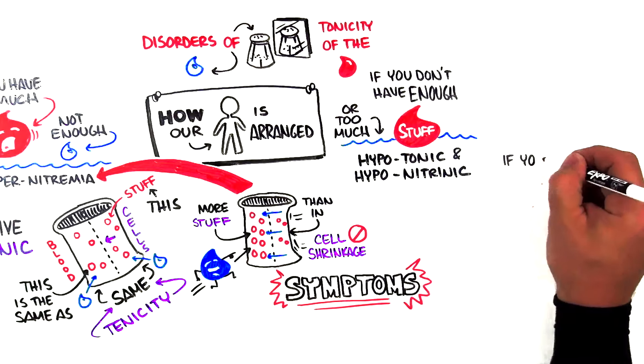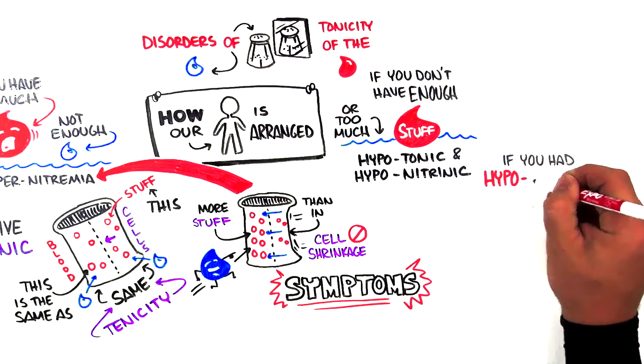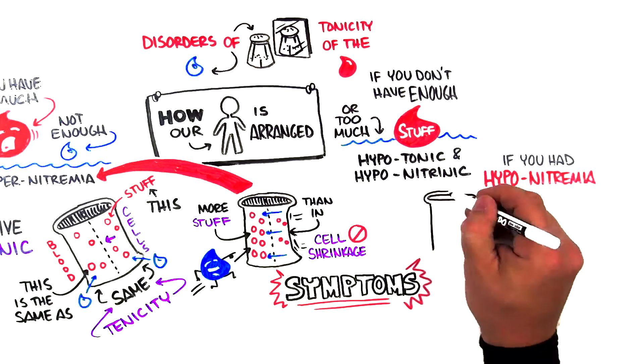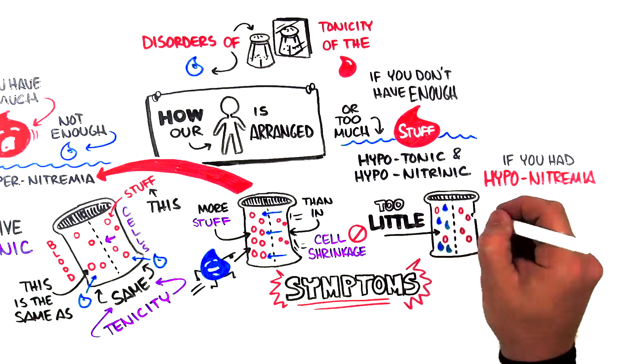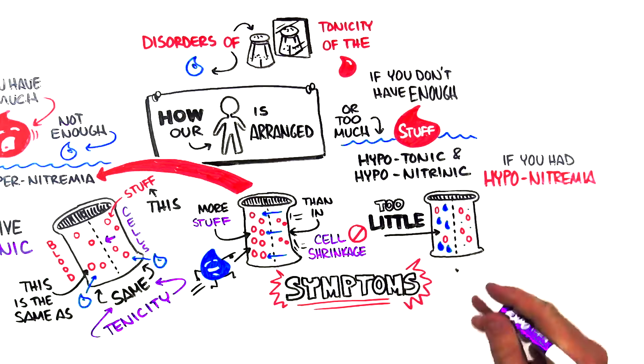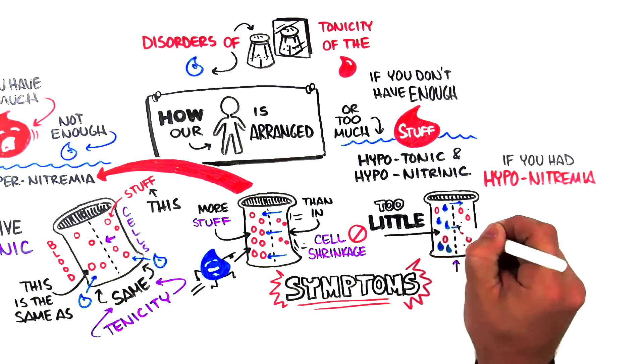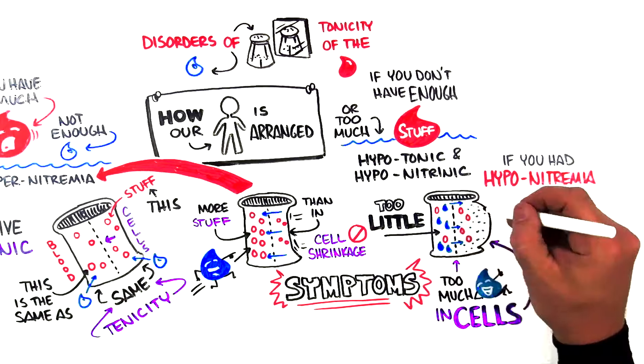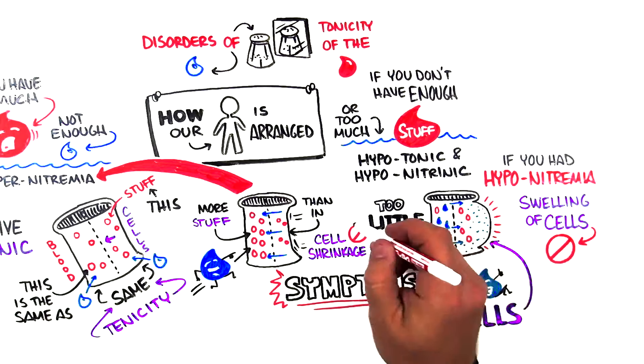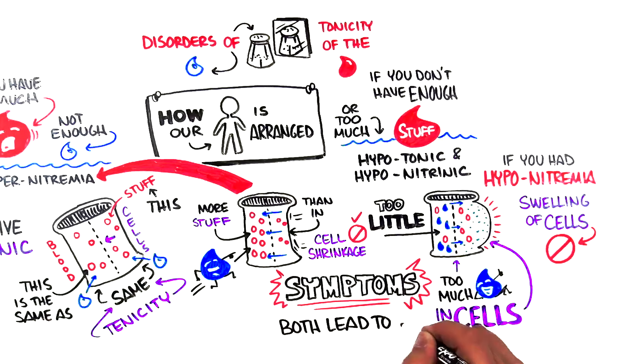Conversely, on the other hand, if you had hyponatremia, you had too little stuff in the blood. Now there's more water in the blood than in the cells. And because it's a semipermeable membrane, the water is going to go into the cells. Too much water in cells leads to swelling. Swelling of cells is bad. Shrinkage of cells is bad. They both lead to symptoms.